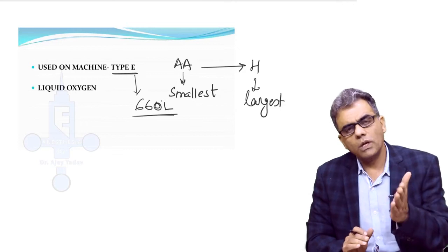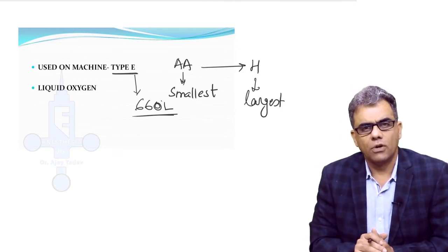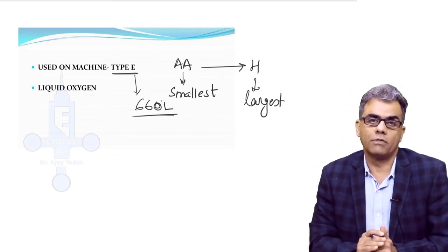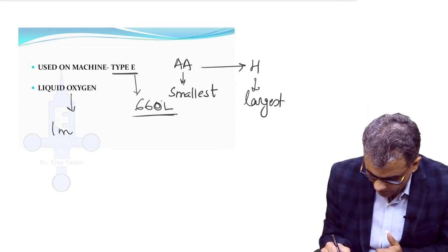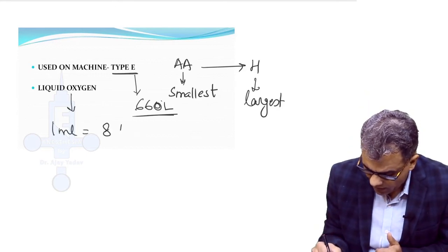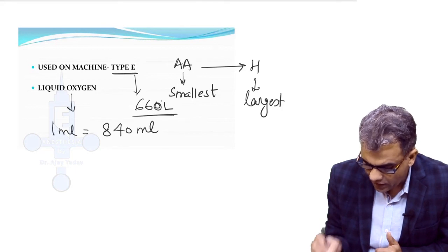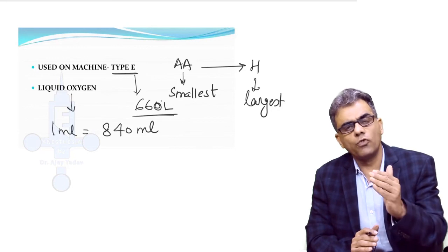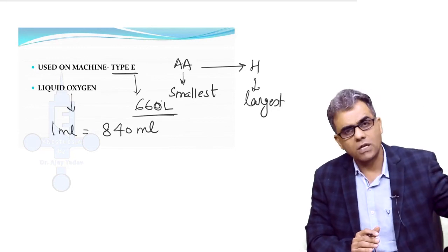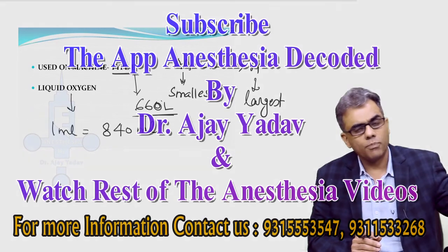Now usually oxygen is stored in gaseous form, but liquid oxygen is also available. The advantage of liquid oxygen is that 1 ml of liquid oxygen can release as much as 840 ml of the gas. Obviously it will be useful for remote locations like wars or disasters where it is not possible to carry large cylinders.